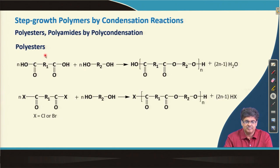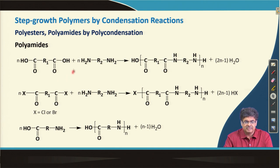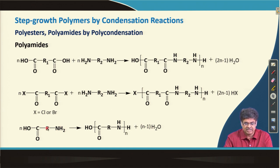Here are some examples of step growth polymer processes. Polyesters can be made from a diacid and a diol — the ester group appears in the polymer backbone. Polyesters can also be made using diacid halides reacting with a diol. Similarly, polyamides can be synthesized using diacids and diamines, or diacid halides and diamines, or from amino acid-type monomers where one end has an amino group and the other has an acid group, which self-condense.